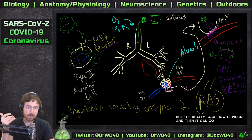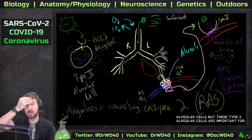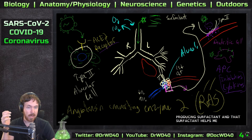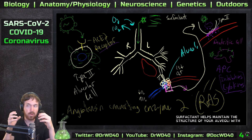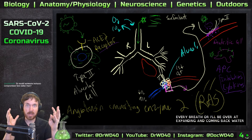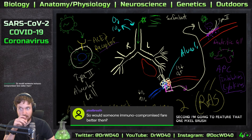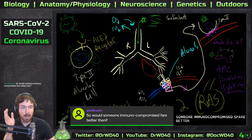The virus can go into these Type 2 alveolar cells, and these Type 2 alveolar cells are important for producing surfactant. That surfactant helps maintain the structure of your alveoli - with every breath your alveoli are expanding and coming back. Water could actually cause your alveoli to collapse.